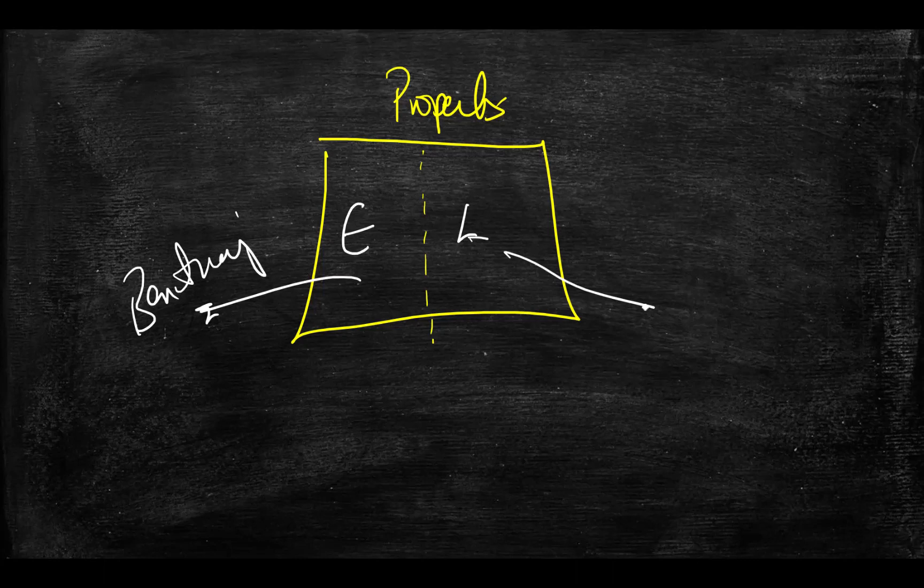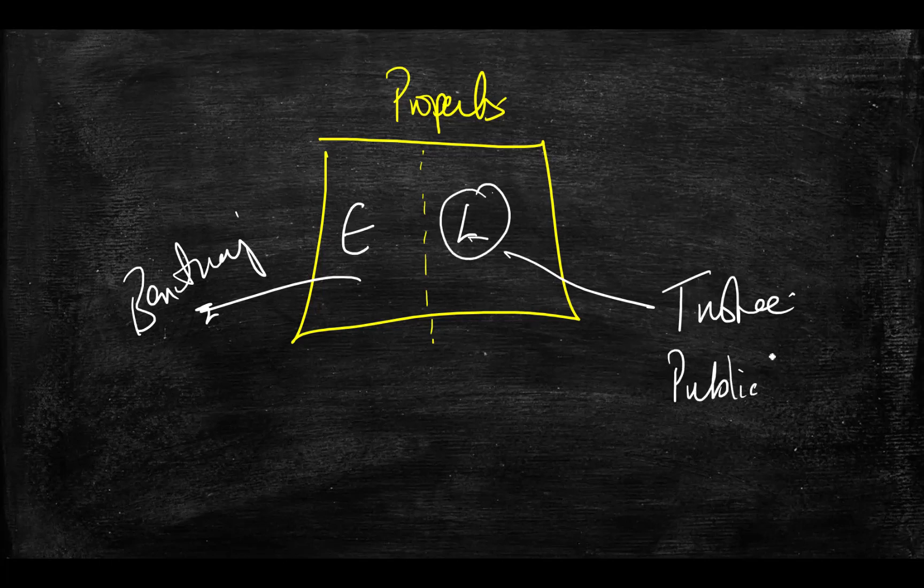The equitable title goes to the beneficiary, and legal title belongs to the trustee. The trustee must be seen in so-called public, so the trustee is the face of the trust, the representative of the trust, the manager of the trust. All of the mechanics of the trust, for it to work and operate, all of that rests on the trustee.